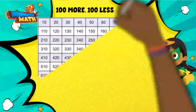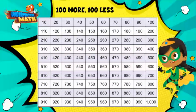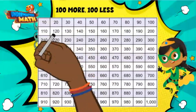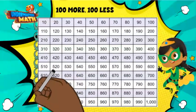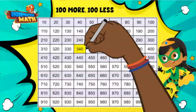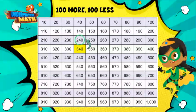Sometimes we also need to know 100 more and 100 less. We can use a similar chart. You might notice that this chart counts by tens instead of ones. This means that as you move up and down a row, we are counting up by 100 or down by 100. Let's look at the number 340. If we want to know which number is 100 less, we can look one row up — we landed on 240. If we want to know which number is 100 more, we can look one row down. We land on 440.